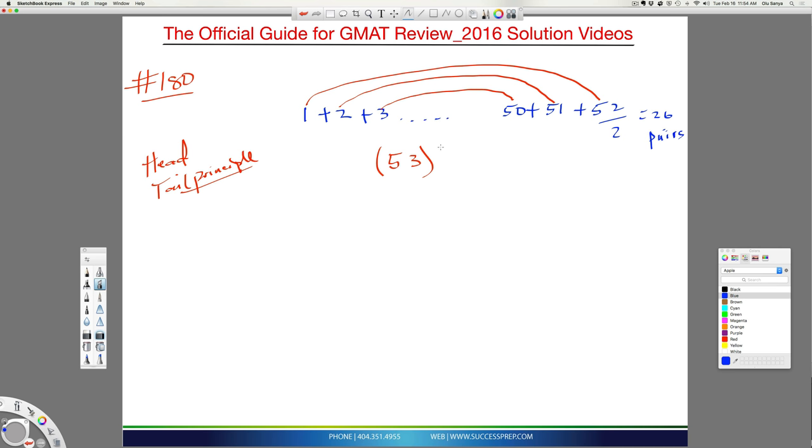There are 26 pairs in this list. So I'm going to get 53 26 times. So I'm going to multiply that, and that's going to give me 1378. And that's your answer. Your answer is C.